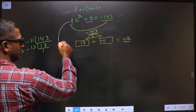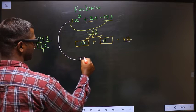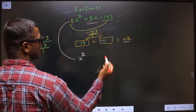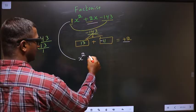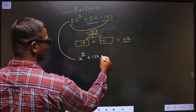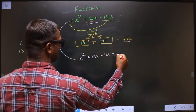Now this will change 2. In place of plus 2x, now you write plus 13x minus 11x minus 143.